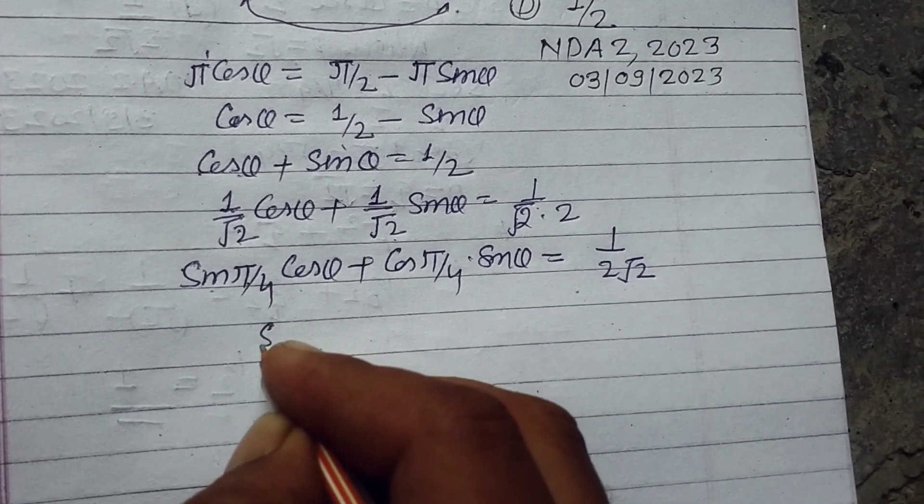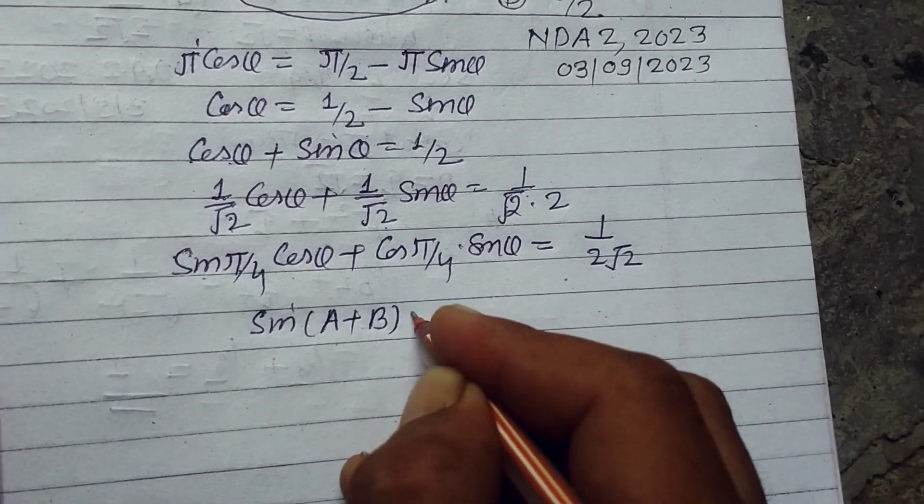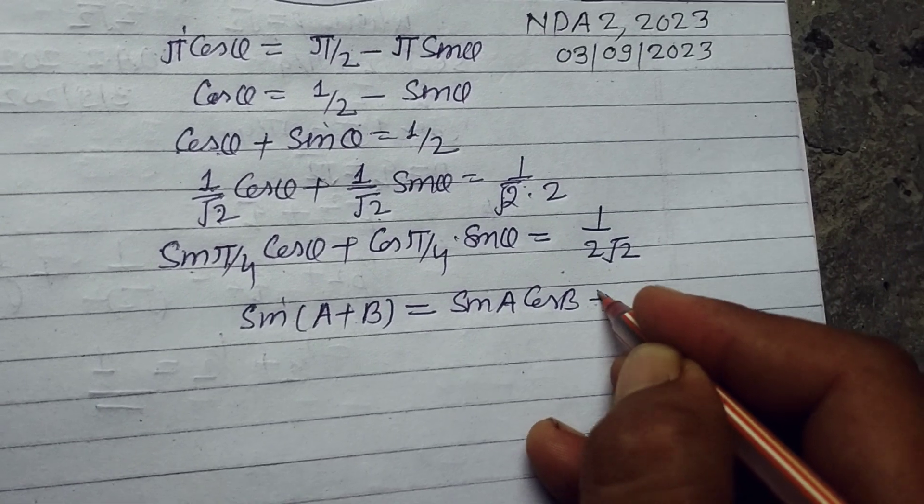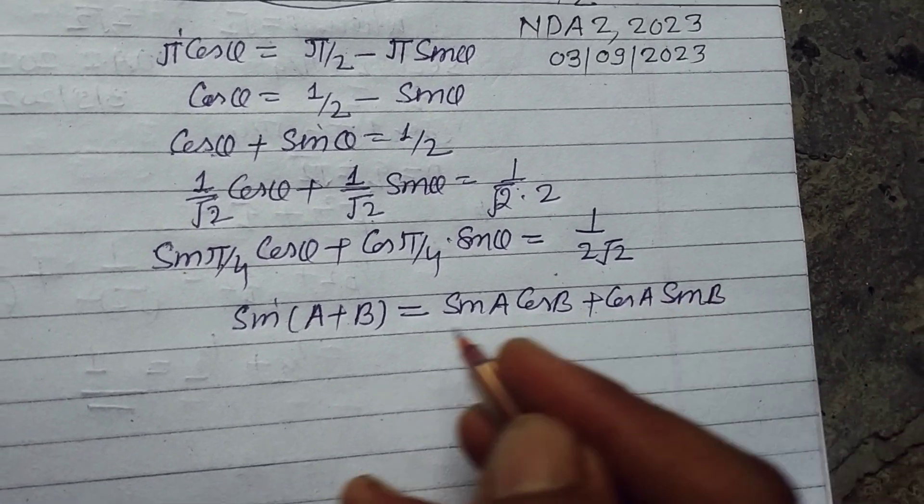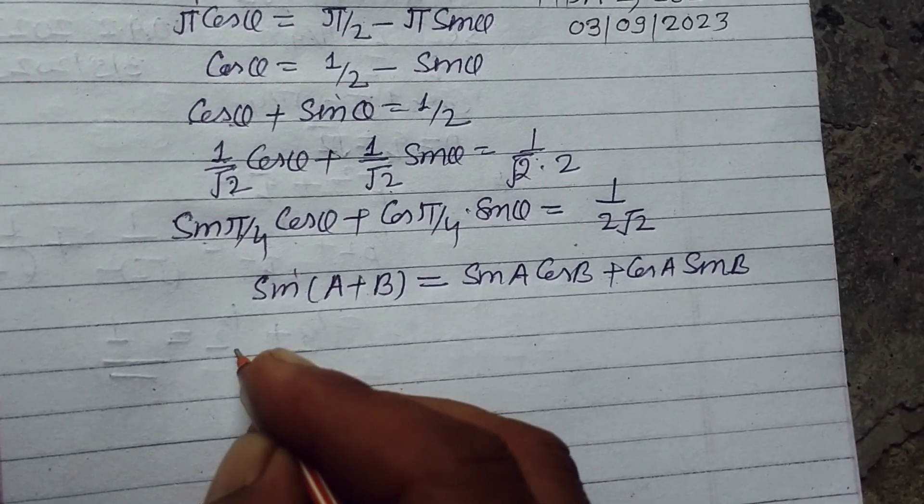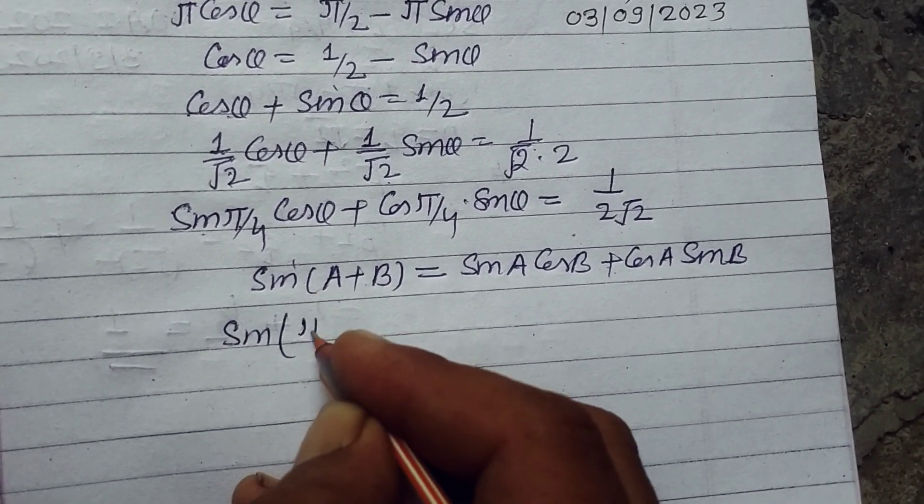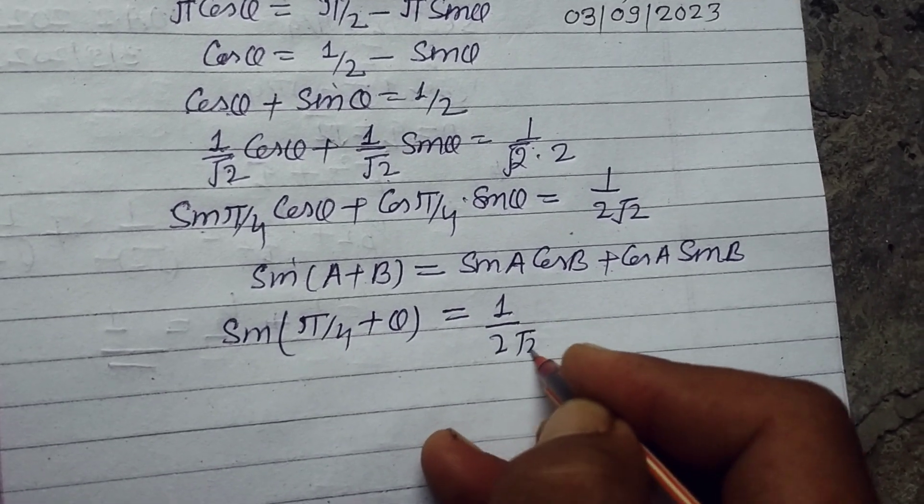this is the formula that sin(A + B) = sin A cos B + cos A sin B. So using this, we have sin(π/4 + θ) = 1/(2√2).